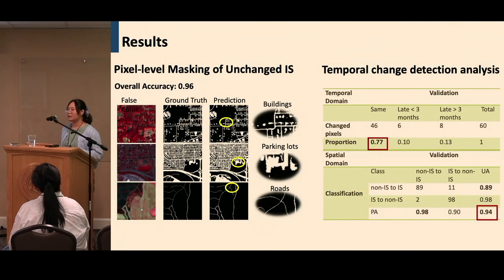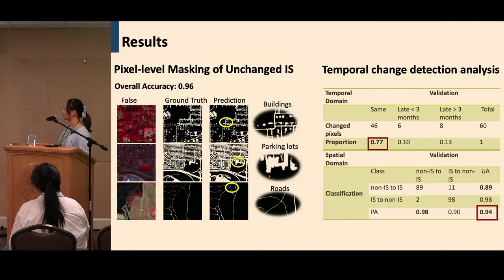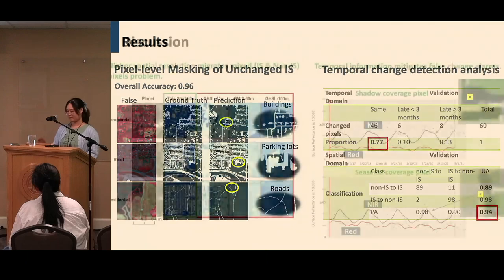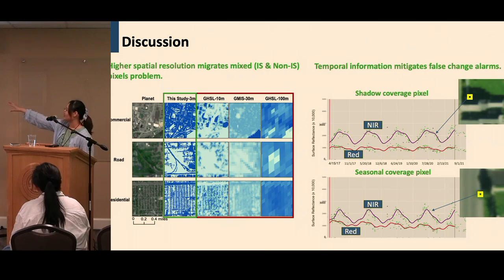Our results show that the first step — pixel-level masking using the U-Net — can detect buildings, parking lots, and roads very well, with clear delineation due to the three-meter high resolution. For temporal change detection, we achieved 0.77 accuracy. We also found that three-meter resolution is really important for urban studies compared with other resolutions like 10-meter, 30-meter, and 100-meter.